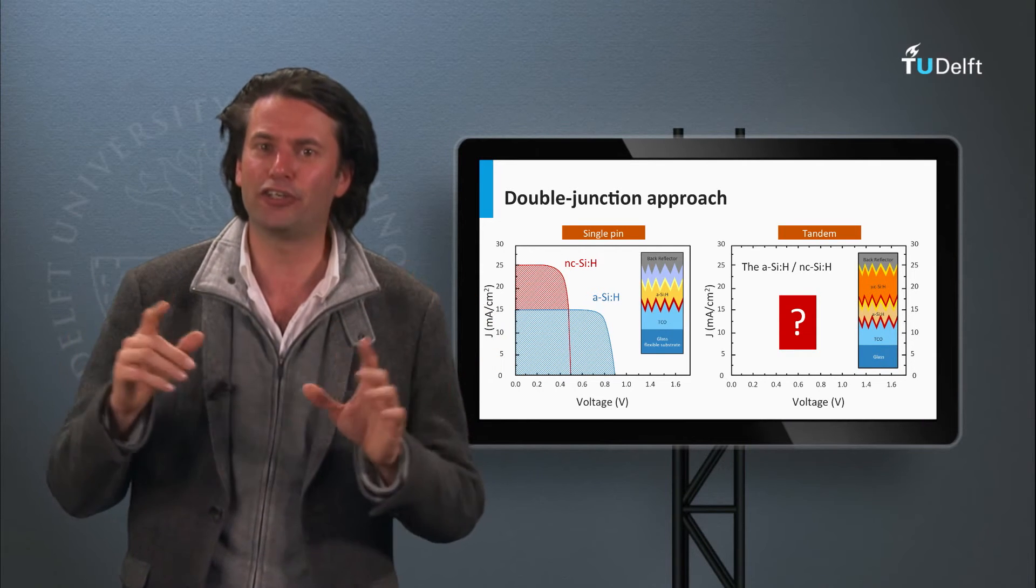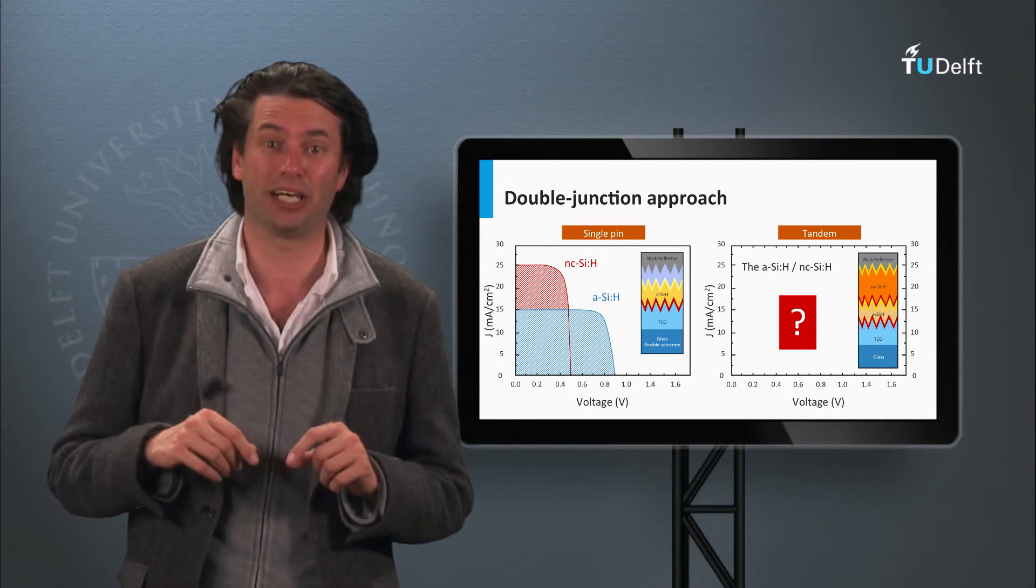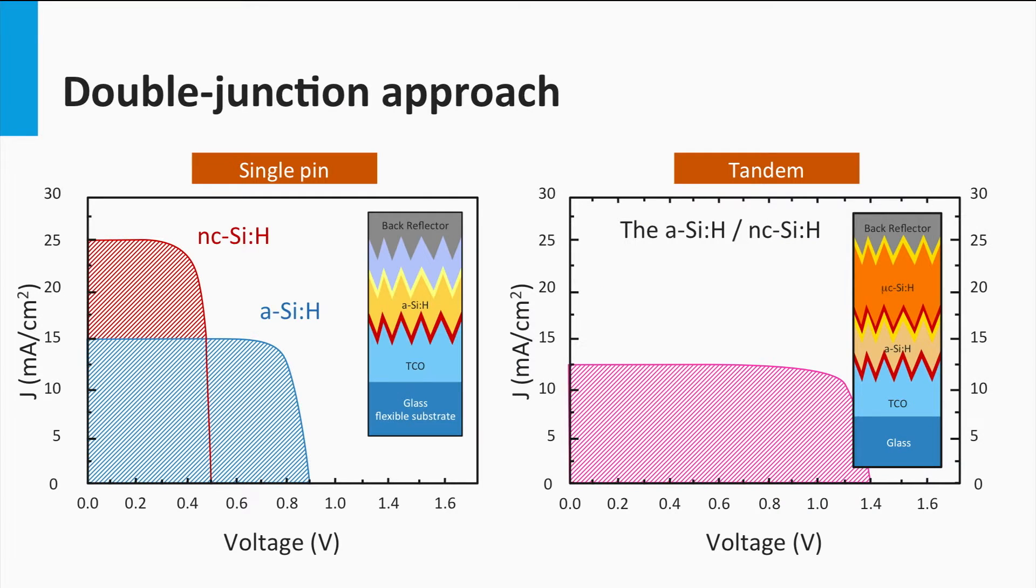How would the JV curve of the corresponding tandem cell look like? If we would make a multijunction of both components, we would get a cell with an open-circuit voltage equal to the sum of the open-circuit voltages of the individual single cells. The resulting current density of the double junction is lower than the currents in both bottom cells. The total current utilization of the tandem cell is determined by the bottom cell, which is 25 mA per square centimeter.